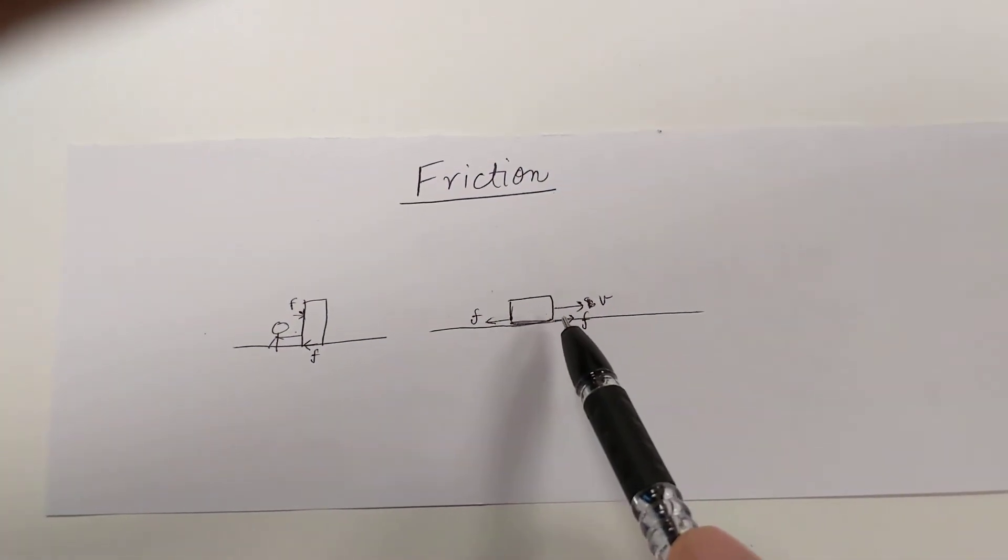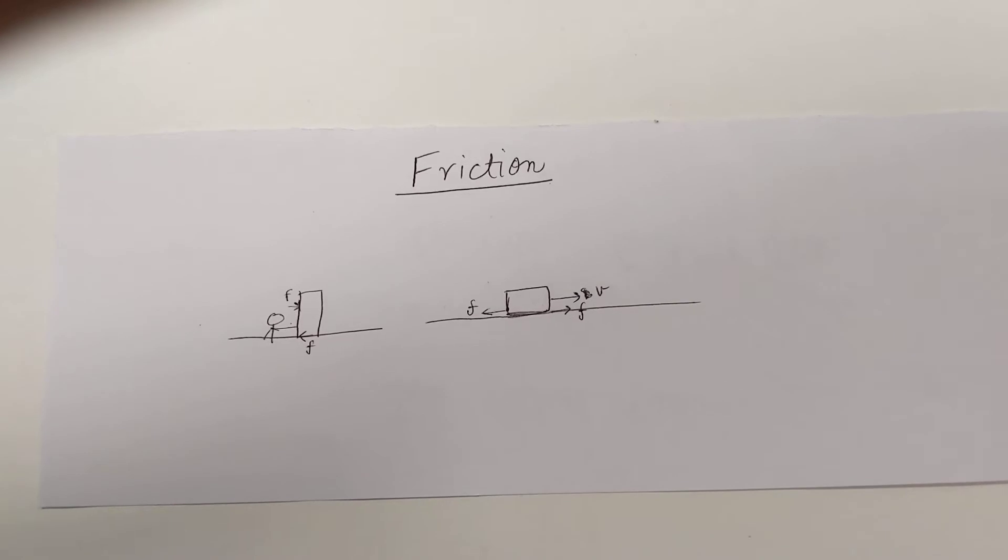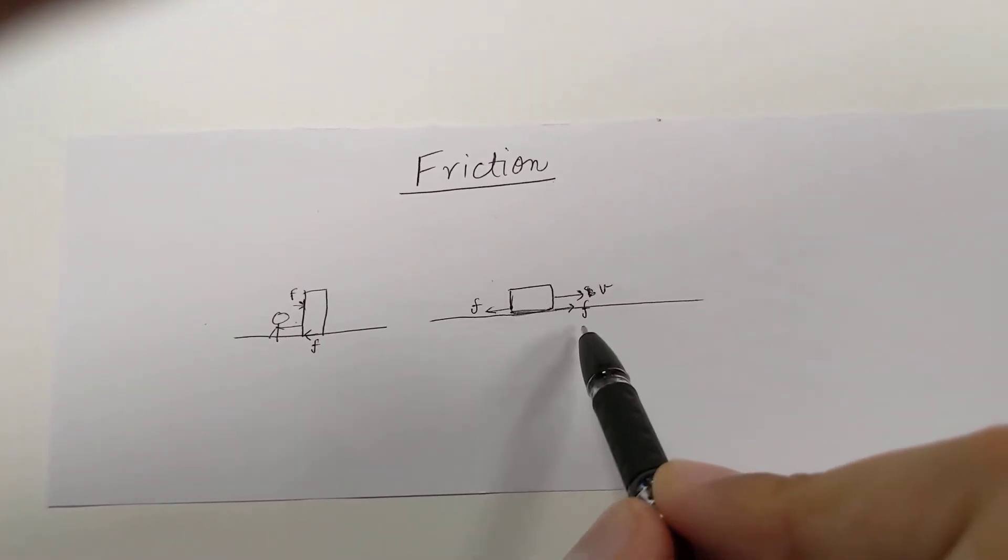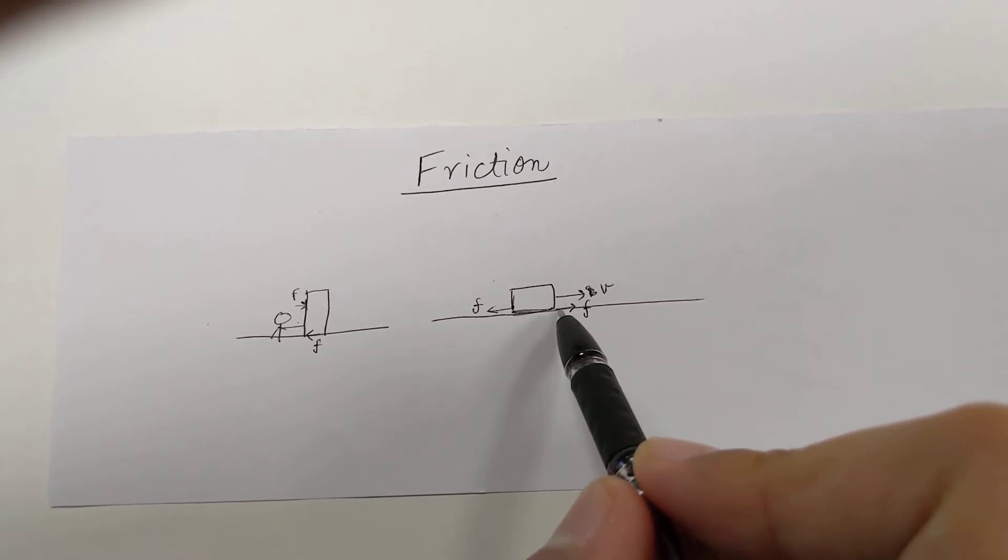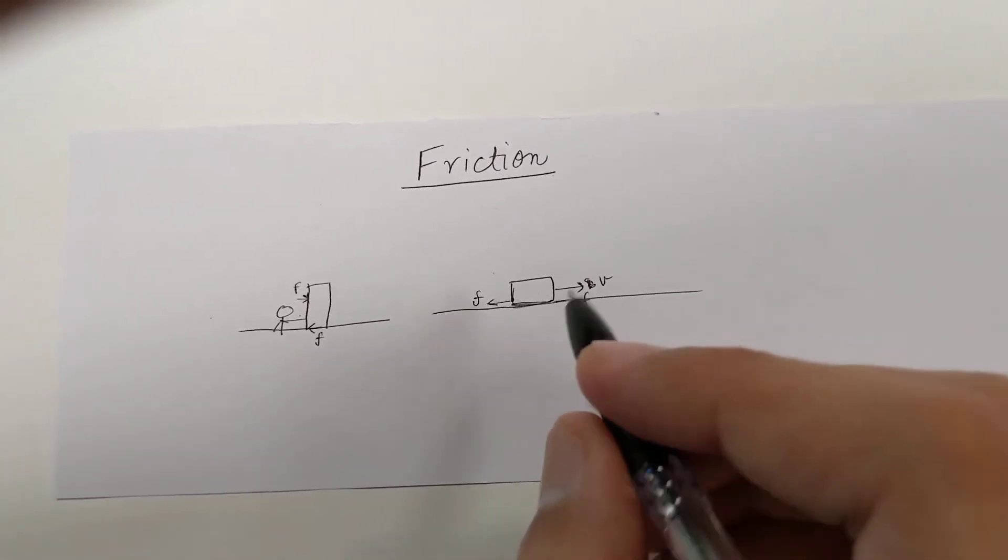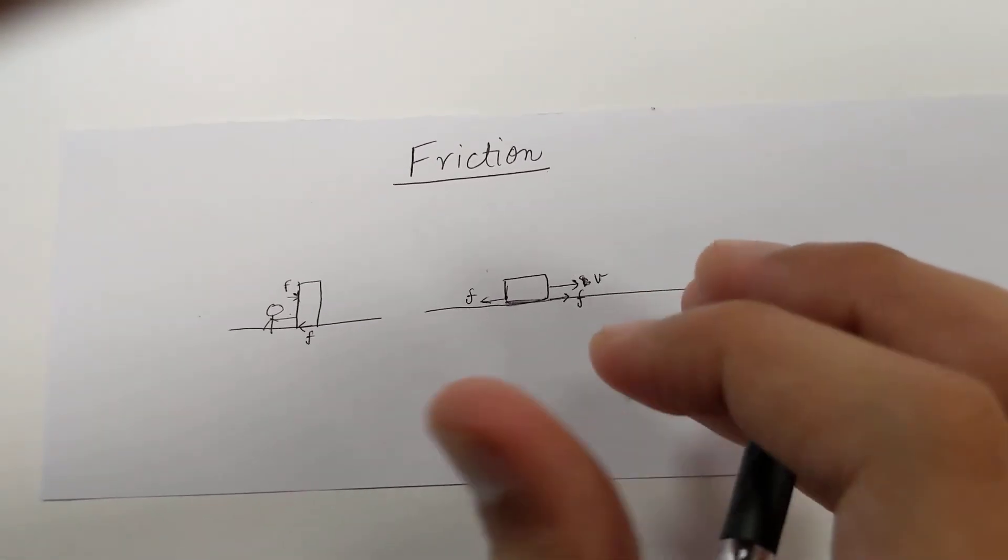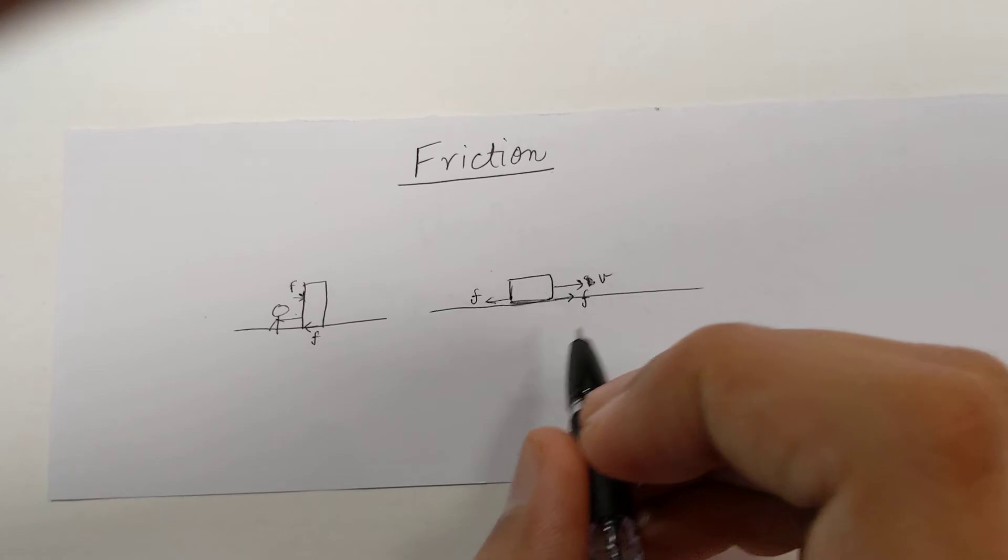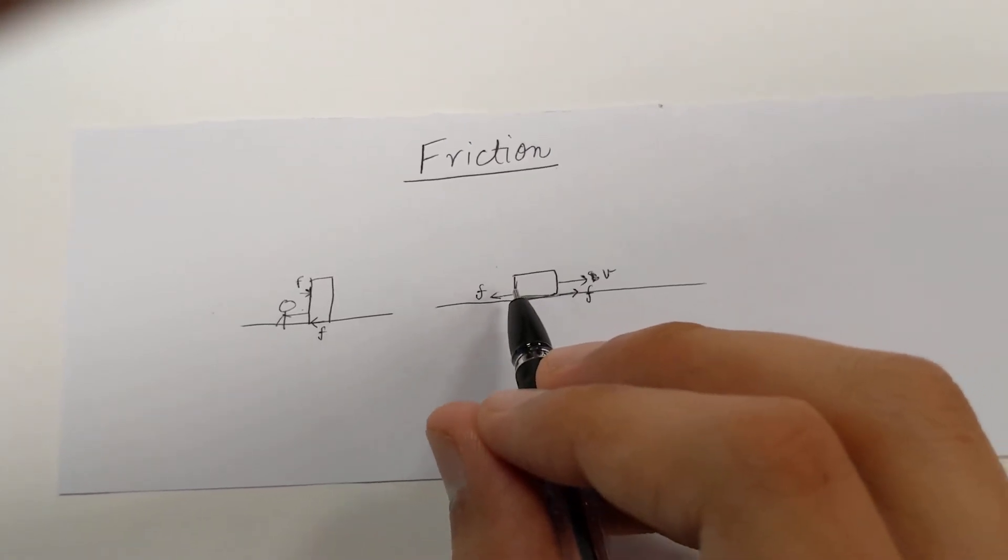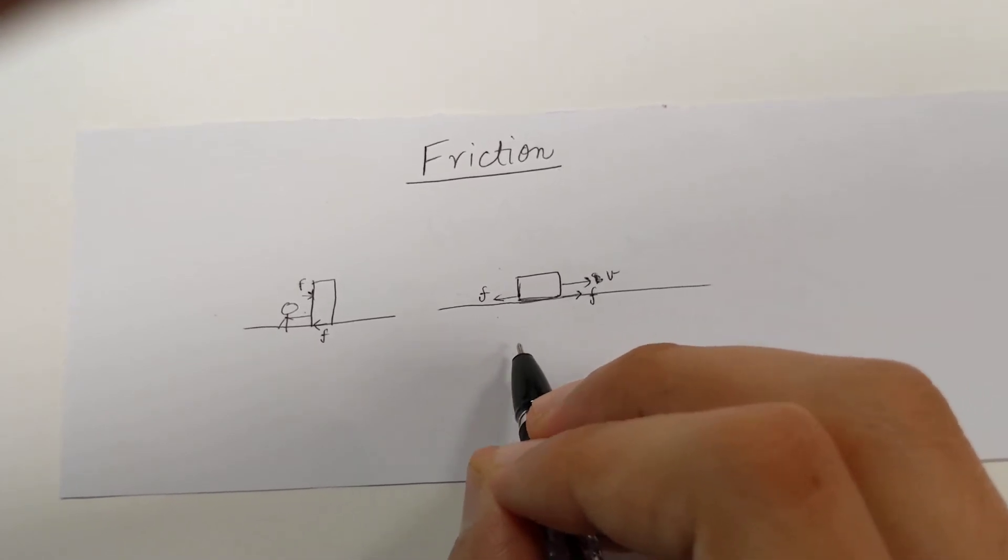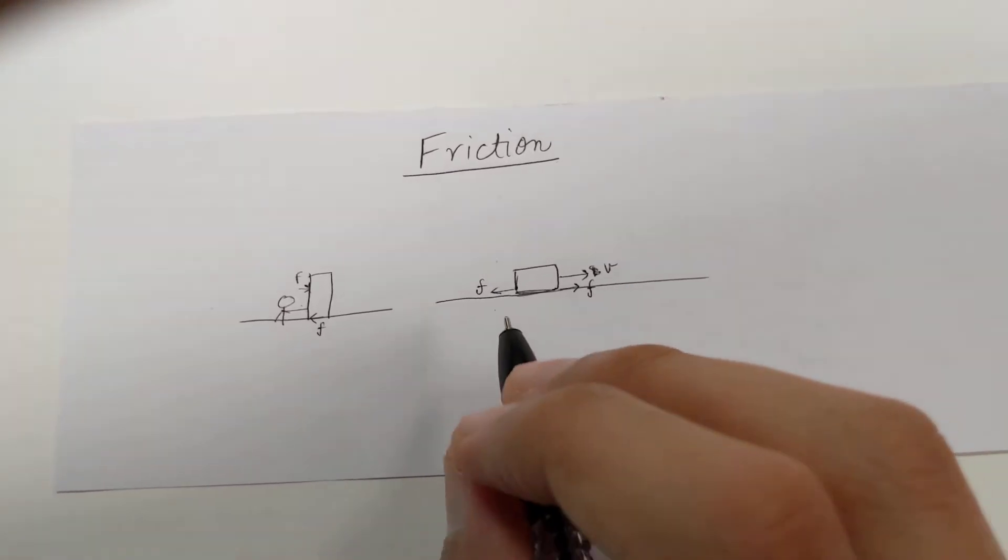If this object is moving forward, then friction will be acting in the backward direction on the object and in the forward direction on the ground. Friction basically wants the ground to catch up with the velocity of the object, so it acts forward on the ground, and it wants the object to be at rest same as the ground, so it acts backward on the object.